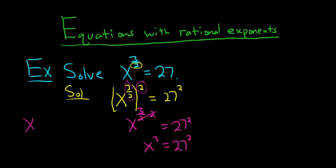If you had X to the 3 fourths, you would raise it to the 4th power to get rid of the 4. Or, if you had X to the 5 thirds, you would raise it to the 3rd power to get rid of the 3. Okay, so now we're here.